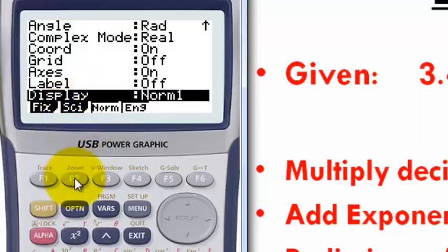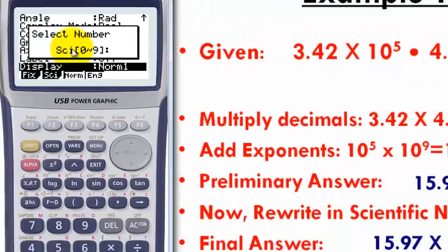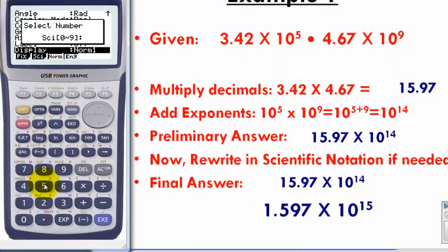So we are going to change normal mode into scientific mode. So we are going to press F2. It's going to ask us how many significant digits do we want our Casio to show. 5 or 6 will be okay. So I'm going to choose 5.